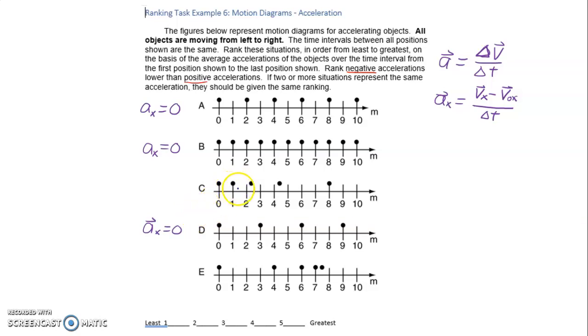In C we see that the object is speeding up and if it's speeding up that means it has a large final velocity, a small initial velocity. And so if we take a large number minus a small number and all of these numbers are positive. We'll take to the right to be positive.